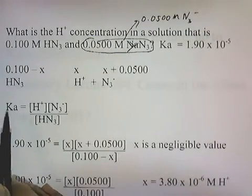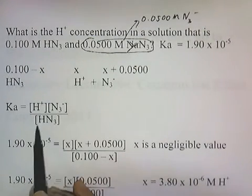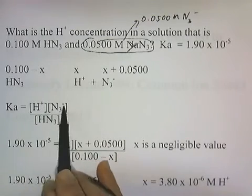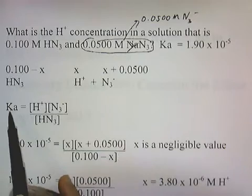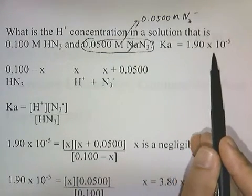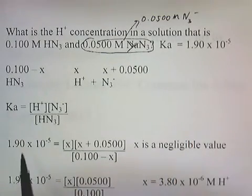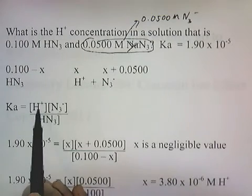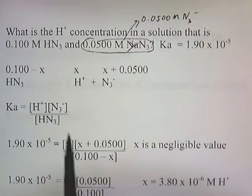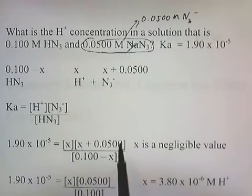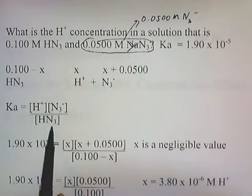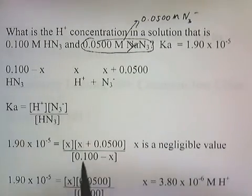The expression for the acid constant is going to be products over reactants. Here are the products on top, reactant goes on the bottom. We fill in the numbers. Ka is given as 1.90 × 10^-5. H+ is x. N3- is x + 0.05. Concentration of HN3 is 0.1 - x.